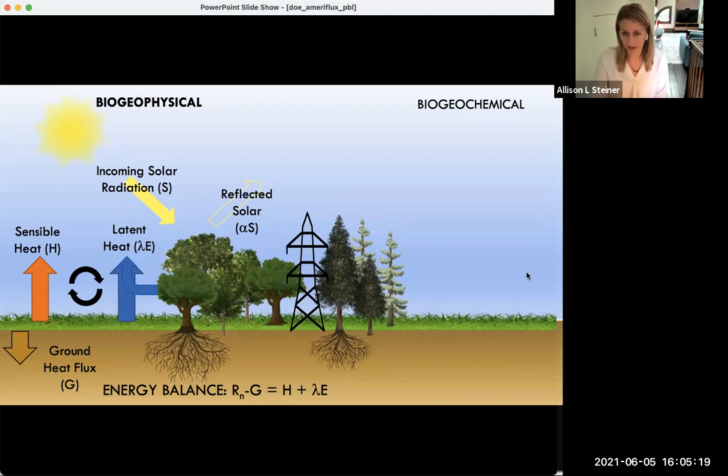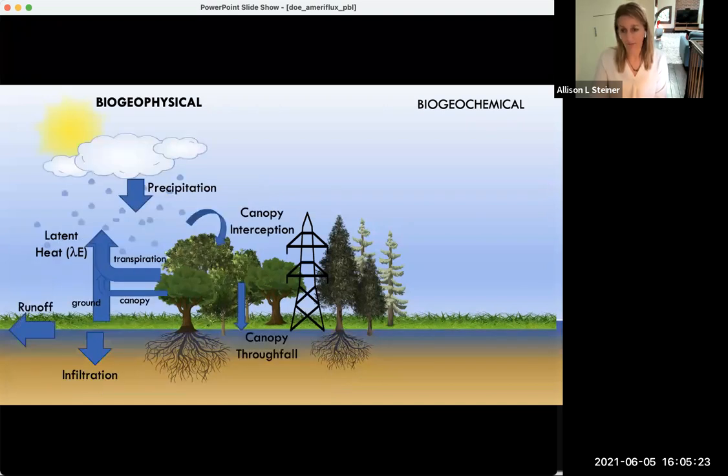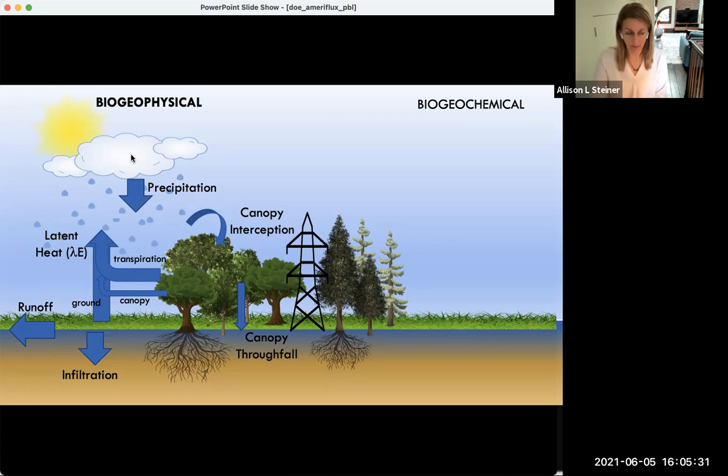The second part of the biogeophysical feedback representation is the water cycle. Now we're thinking about a budget of water, not energy across this interface. In this case, the sole input from the atmosphere is coming as precipitation either in the solid or liquid form. Some of that can be intercepted by the forest canopy by vegetation, but most of it probably makes it through and falls through the canopy to reach the surface where it can be infiltrated into the ground and drive the local soil moisture.